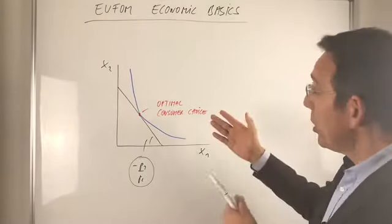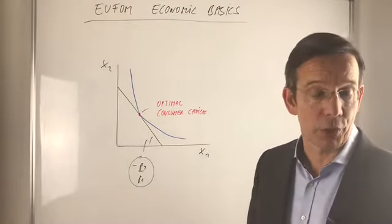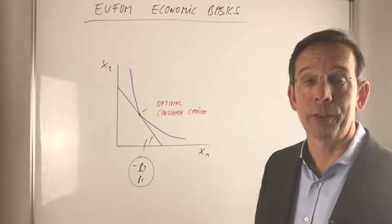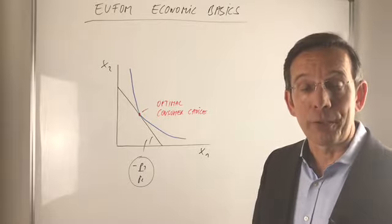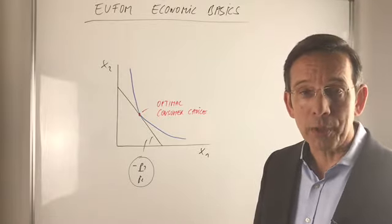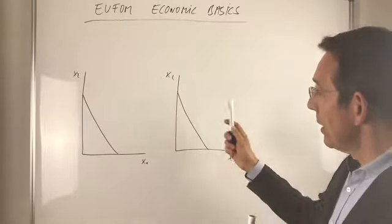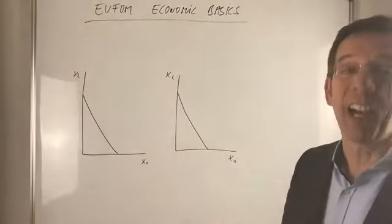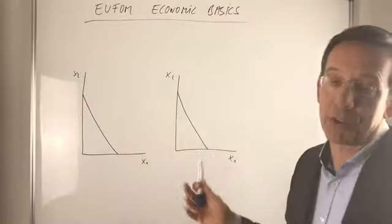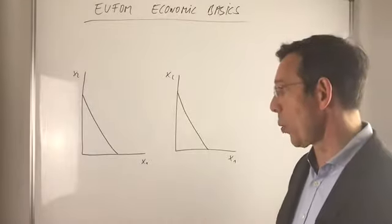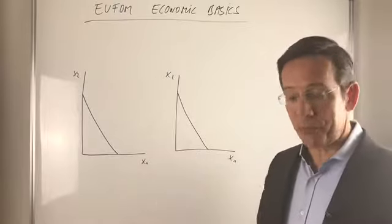Well, we could also now use different preferences to show that there could be different optimal choices for a given budget for different preferences. Why don't we do that? I prepared now two diagrams, just think of those top diagrams should be identical. In fact, they are not, but think about they are identical. That's the price you have to pay if you draw on a whiteboard.